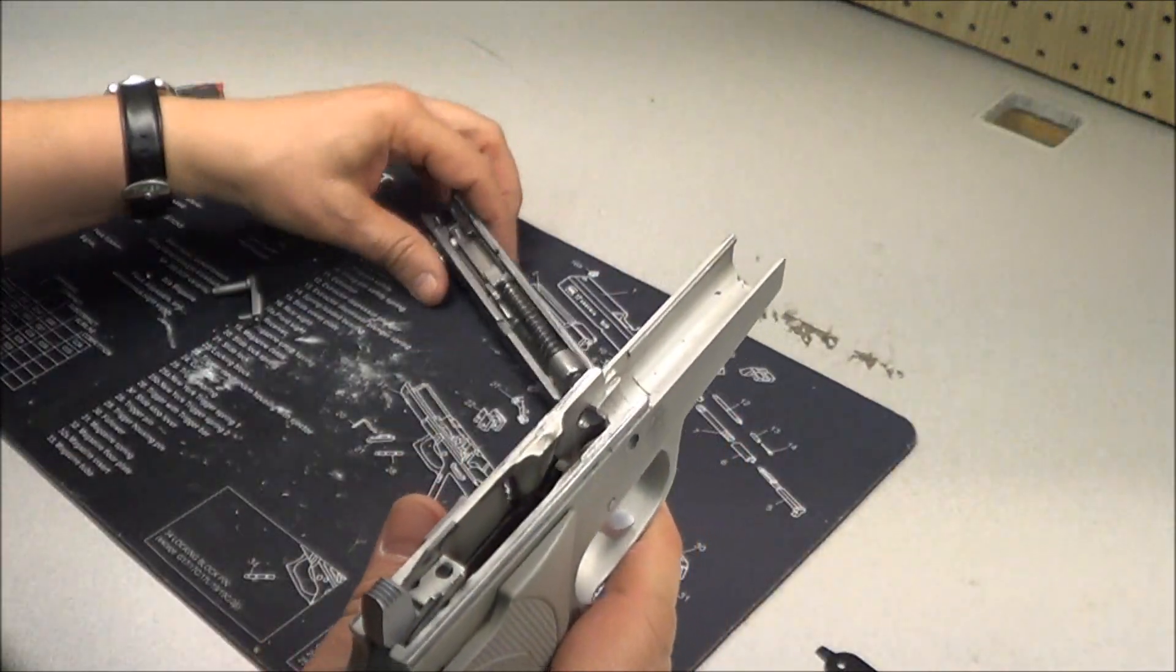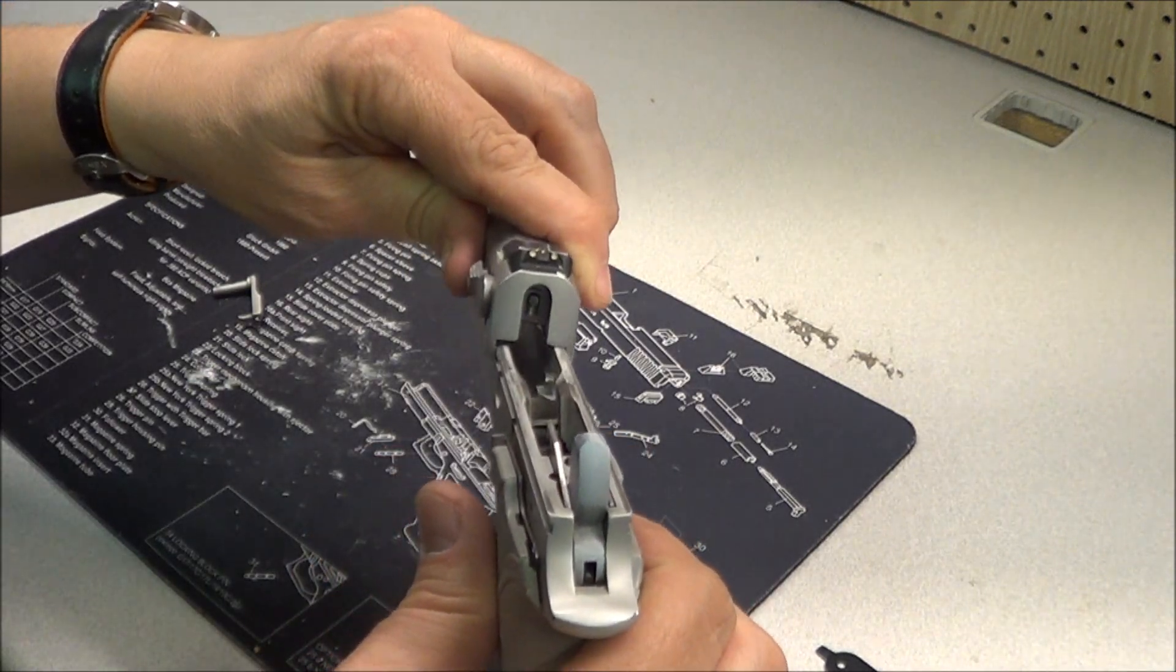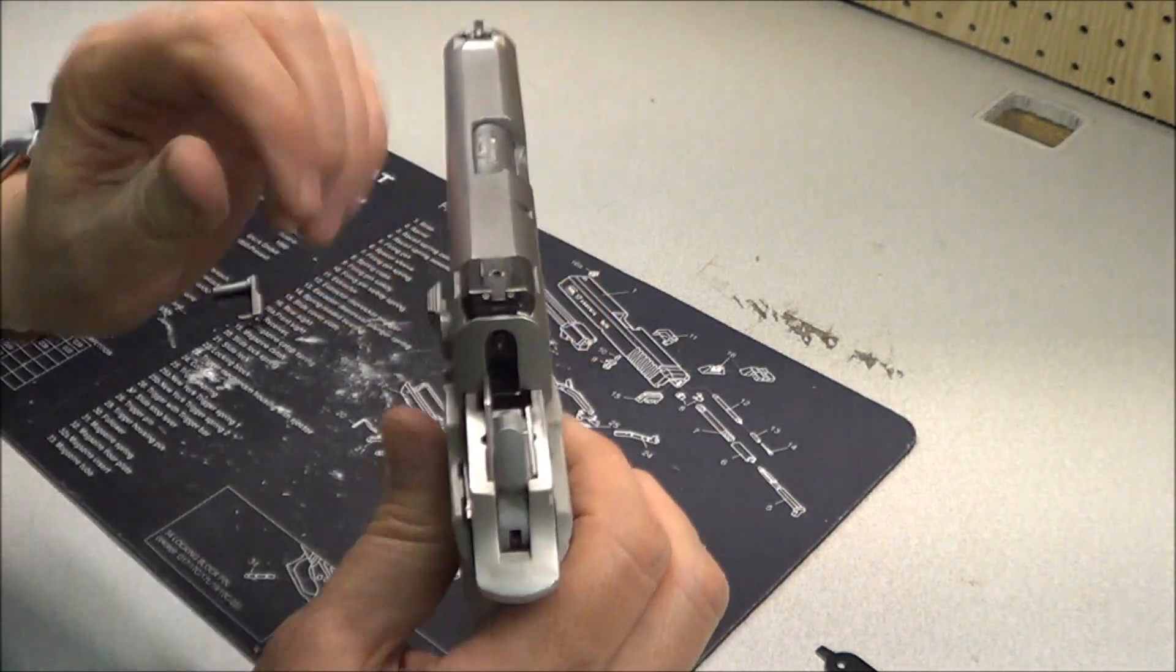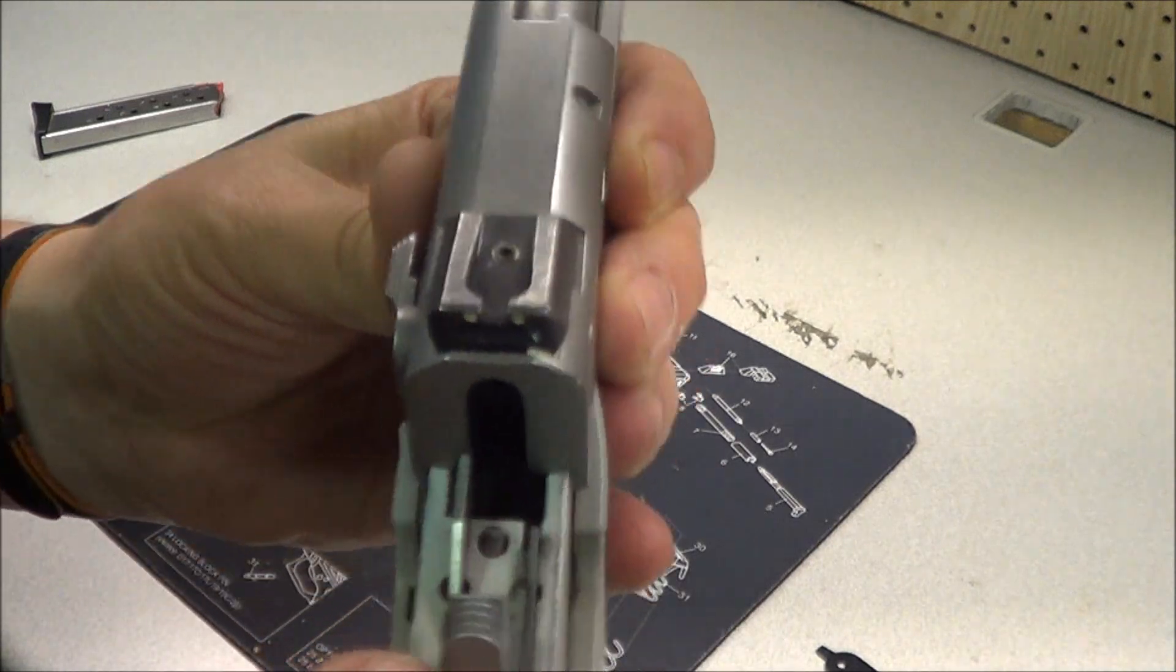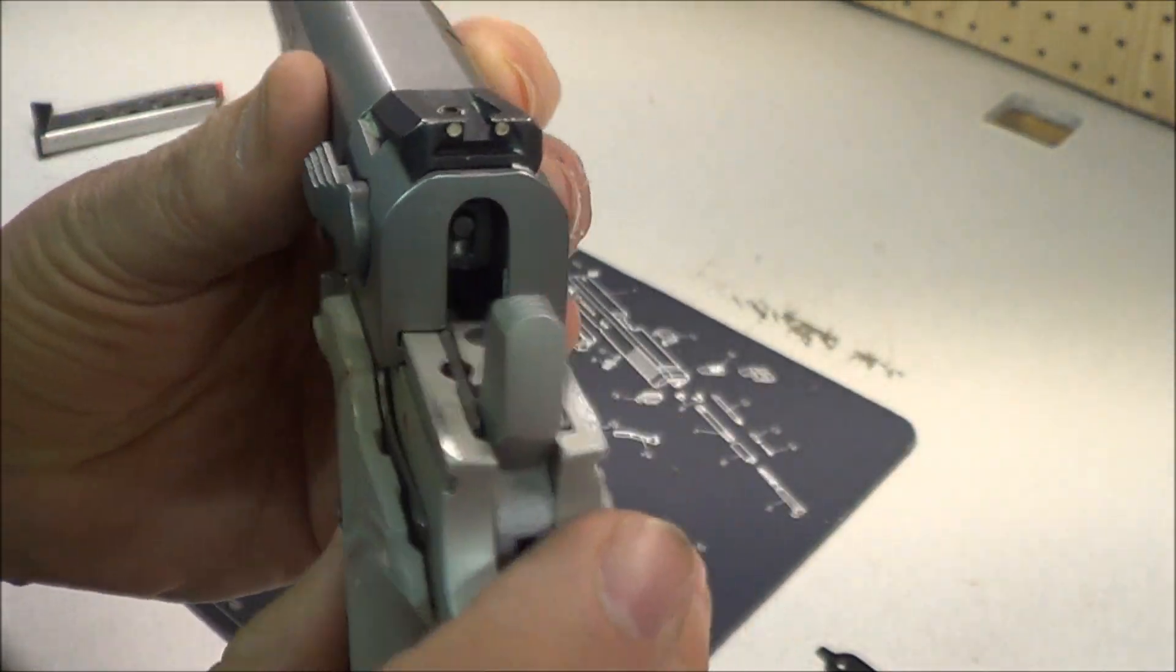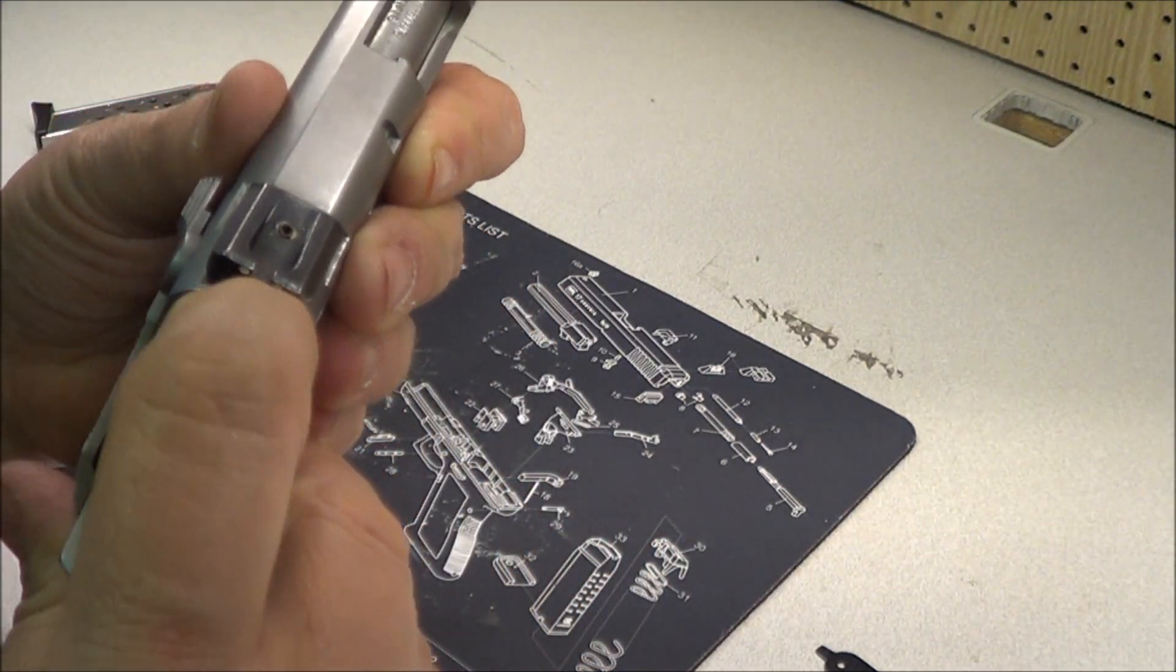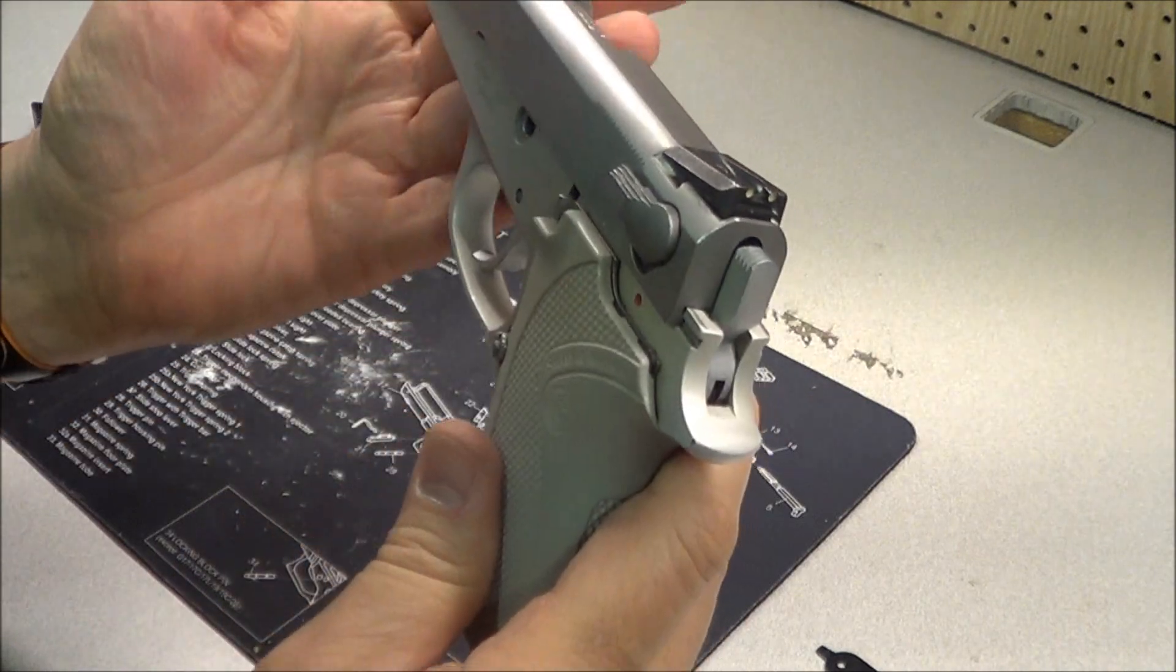So when you put the slide on, you just slide it back in the rail. And when you get to this spot here, you have to push that one down. And then reach over and push the other two down. Like that. And now the slide can come back.